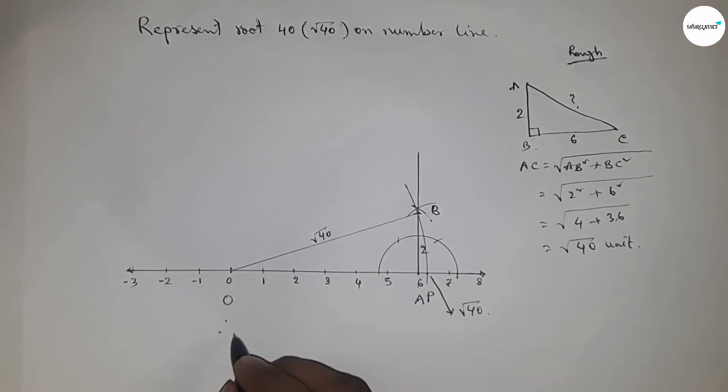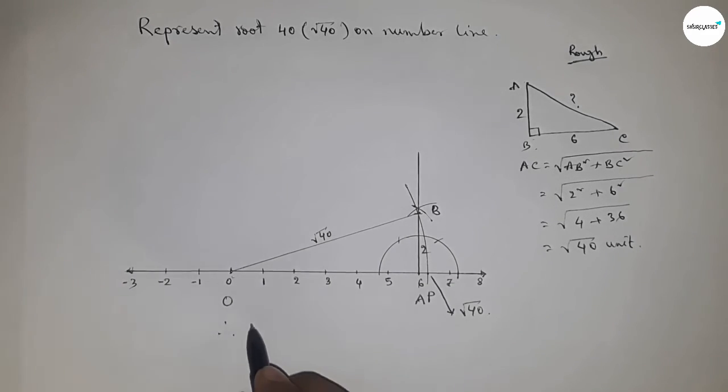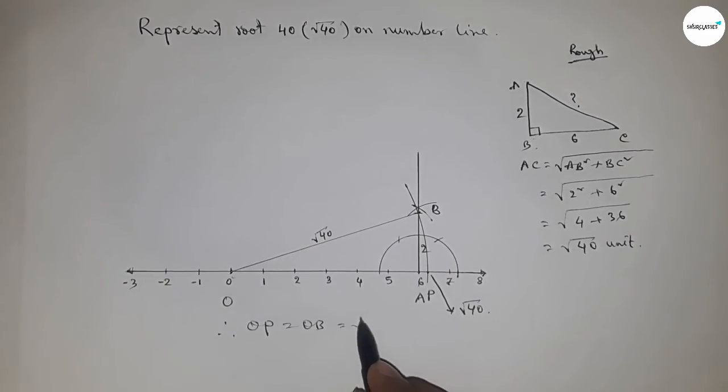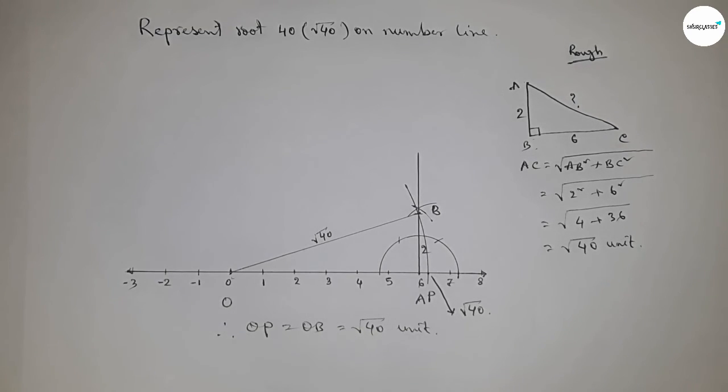So now therefore, distance OB and OP are equal, so OP = OB = √40 units. That's all, thanks for watching. Please subscribe, like and comment on my channel.